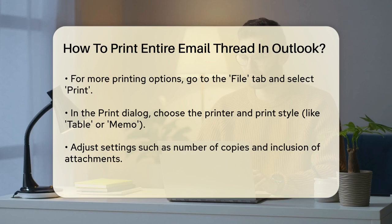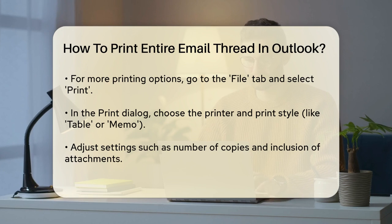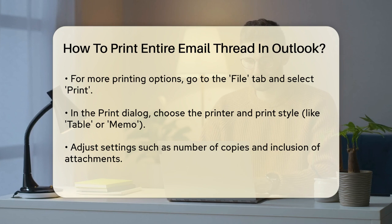For more control, go to the File tab in the upper left corner of the Outlook ribbon and then select Print. In the Print dialog box, you can choose your printer, select the print style such as Table or Memo, and adjust other settings like the number of copies and whether to include attachments.